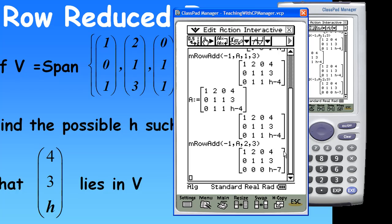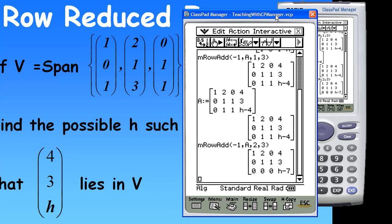And, this is almost a row reduced form already. But, from here, we can see that in order for the system equation to be consistent, H minus 7 must be 0. Otherwise, the system will not have solution.